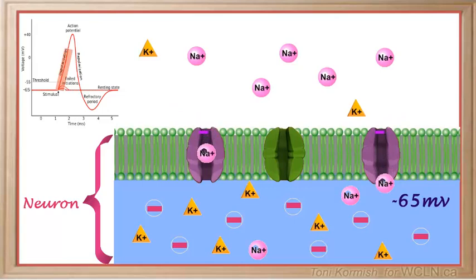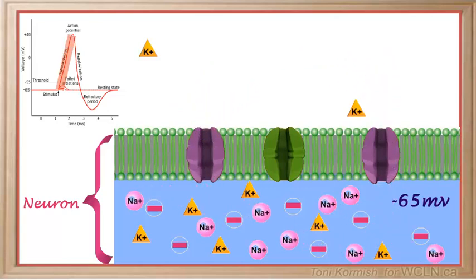the sodium ion gates open. Sodium ions rush into the neuron and depolarization occurs, changing the charge from minus 65 millivolts to plus 40 millivolts. This depolarization creates an action potential.